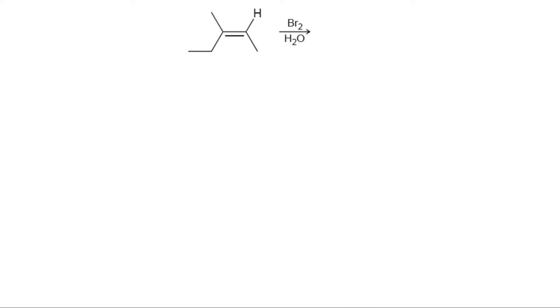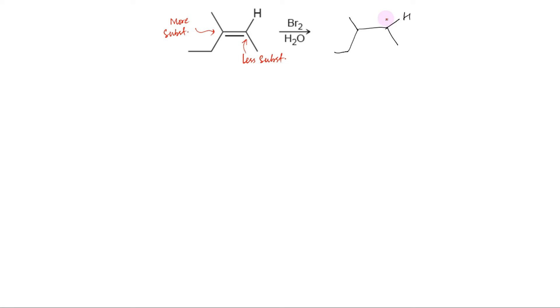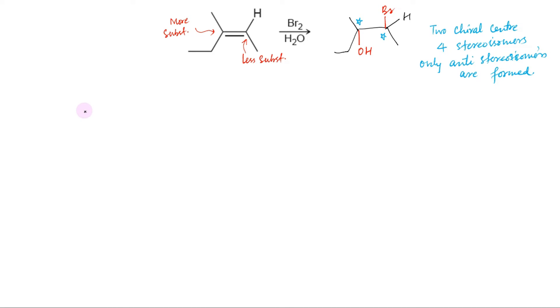Let us predict the major products for the following reaction. The presence of water indicates halohydrin formation — addition of Br and OH. This is the less substituted end and this is the more substituted end of the unsymmetrical alkene. The first step is to identify the regiochemical outcome. Recall that the OH group is expected to be positioned at the more substituted carbon. The next step is to identify the stereochemical outcome. In this case, two new chirality centers are formed; therefore, the product molecule can exist in four stereoisomers.